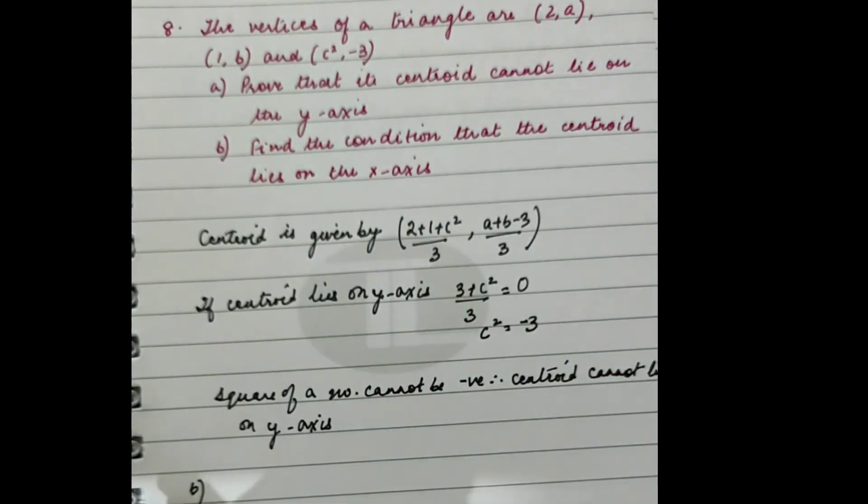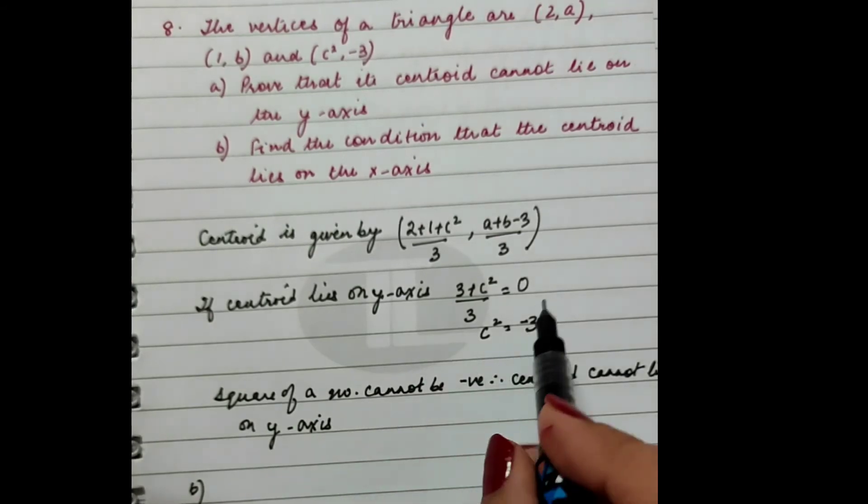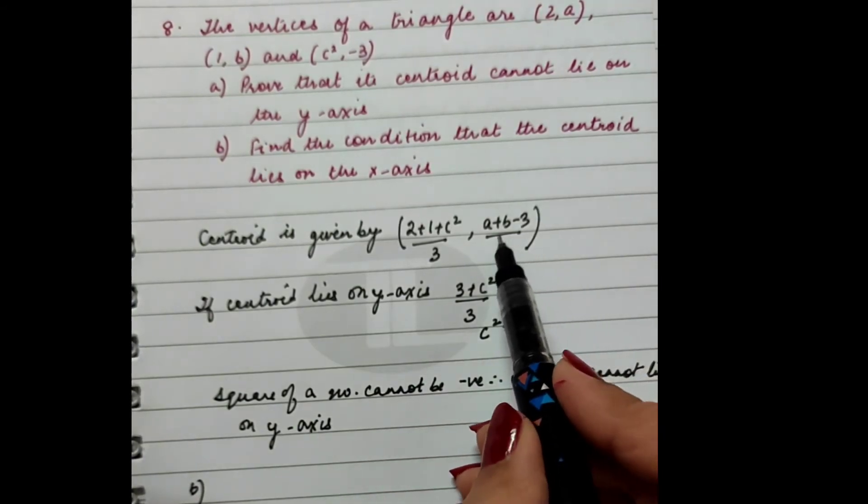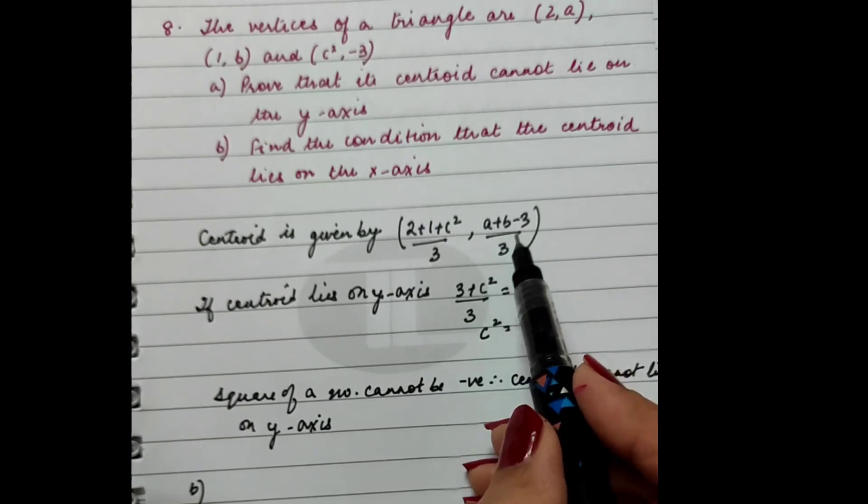Any point lying on the x-axis has its ordinate 0. What is the ordinate of this point? The ordinate of this point is (a + b - 3)/3.